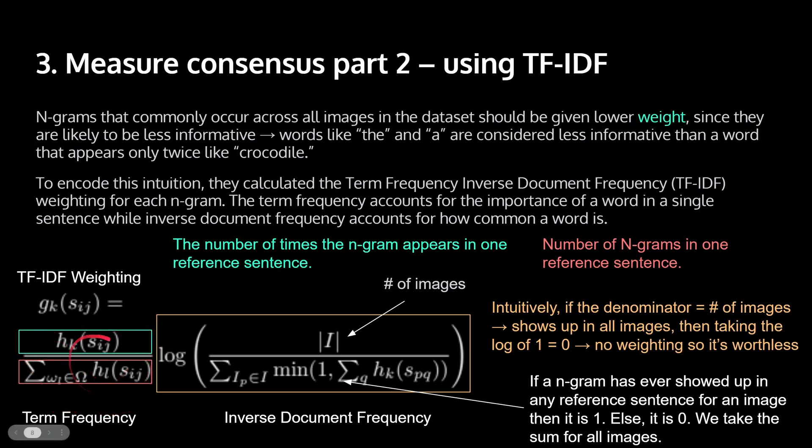This here is the term frequency, and this here is the inverse document frequency. So let's break this apart. So in cyan here, this fancy math symbol is essentially the number of times the n-gram appears in one reference sentence. How many times does this n-gram appear? And in red here, this is the number of n-grams in one reference sentence. Like, how many n-grams are there in total? For example, if I have a sentence of length, let's just say I'm using this sentence right here. If I'm counting unigrams, it will be the length of this sentence. So that's essentially what it is right here.